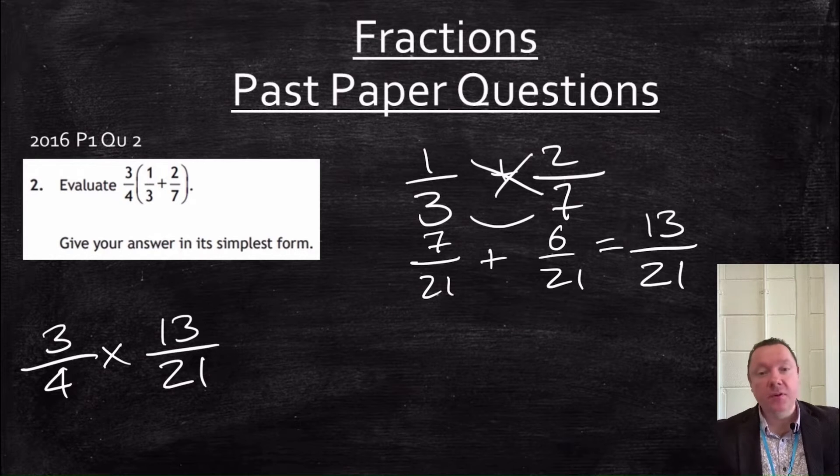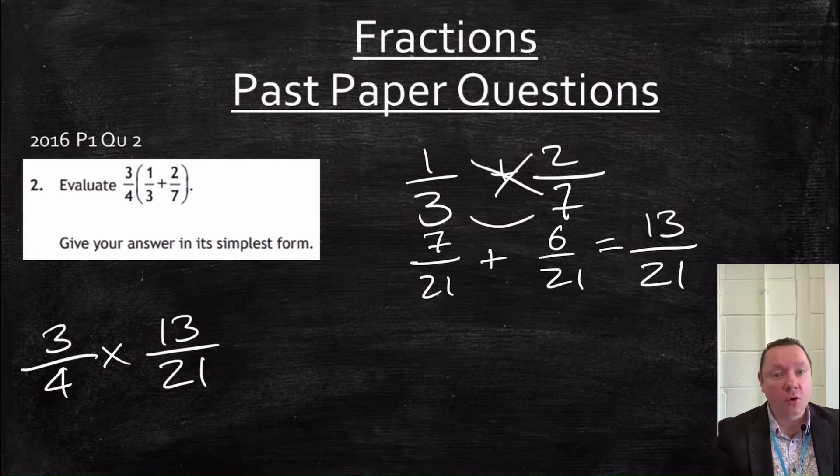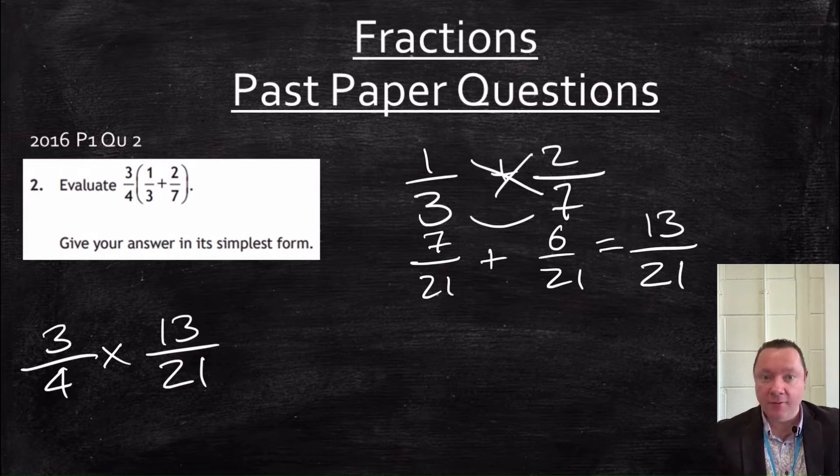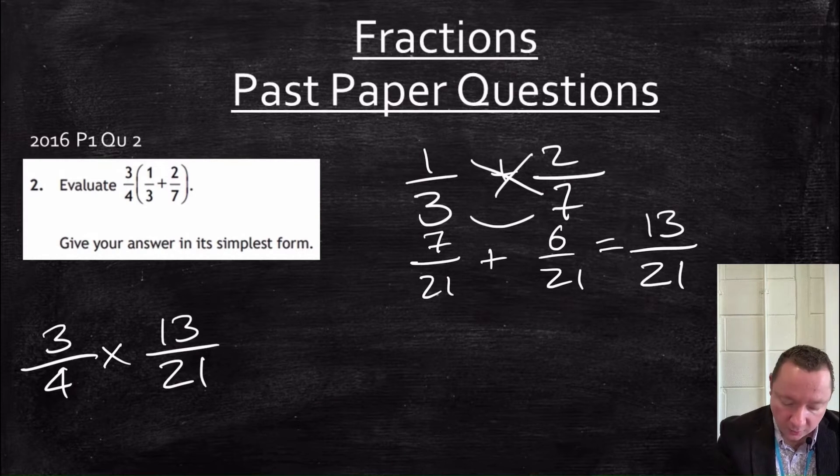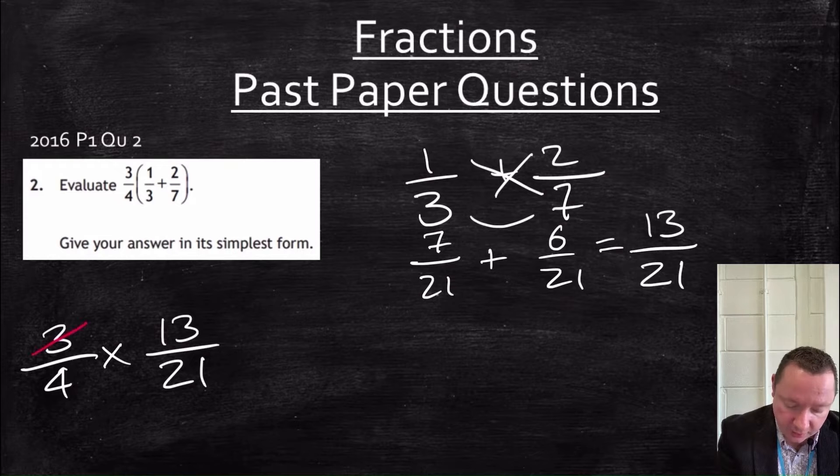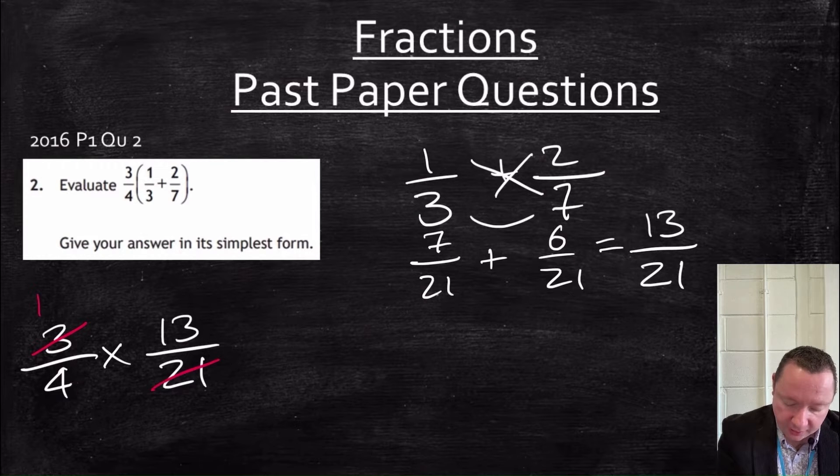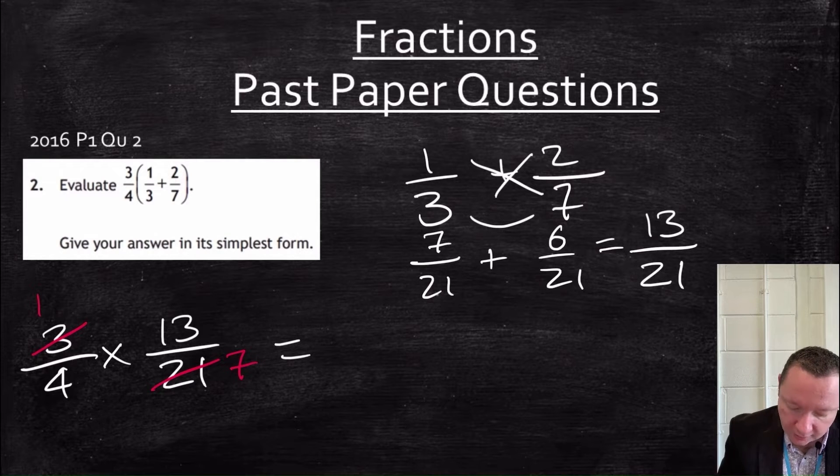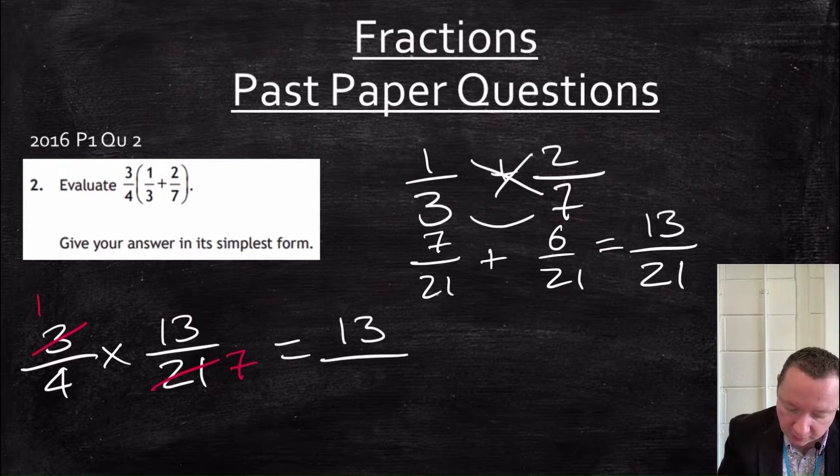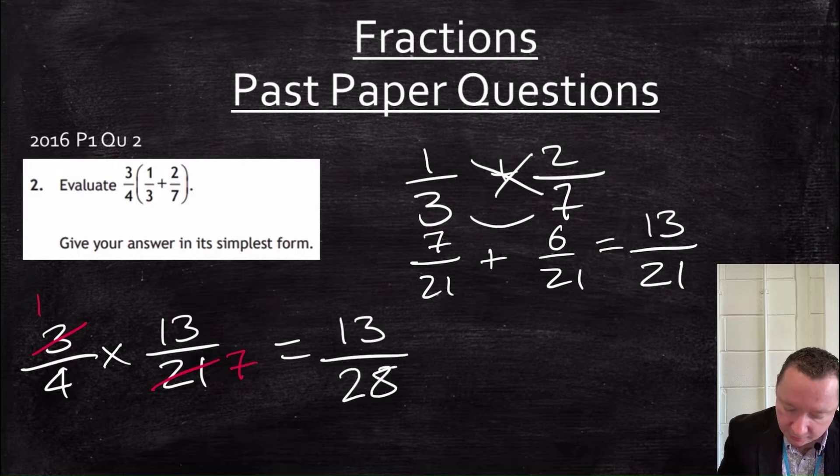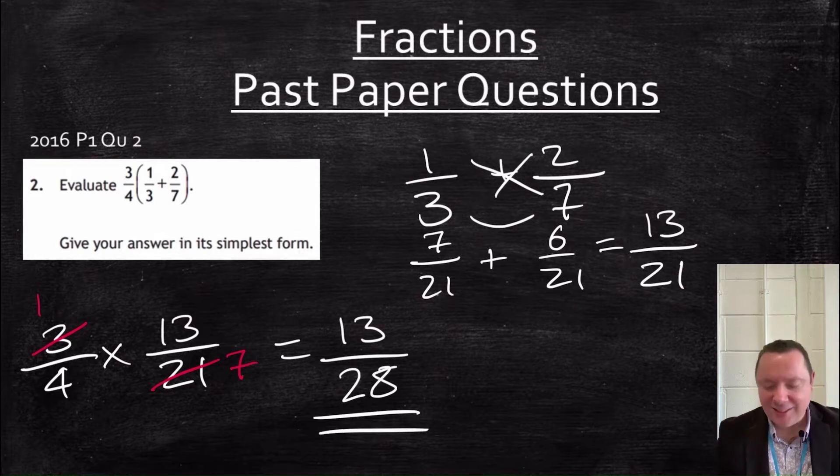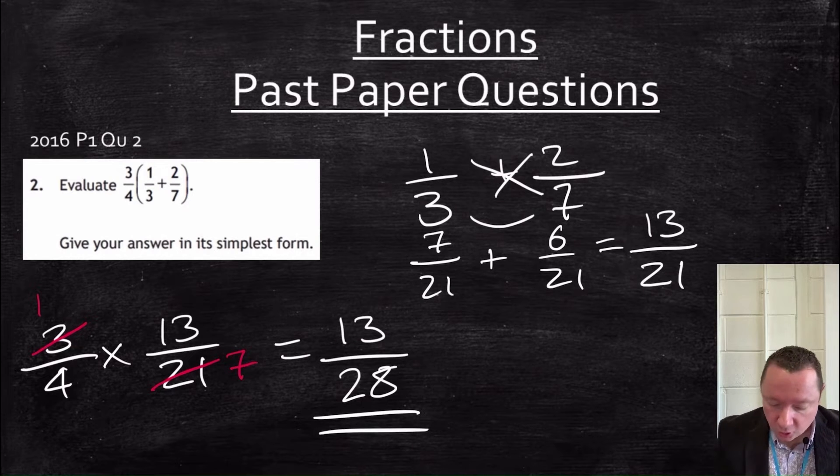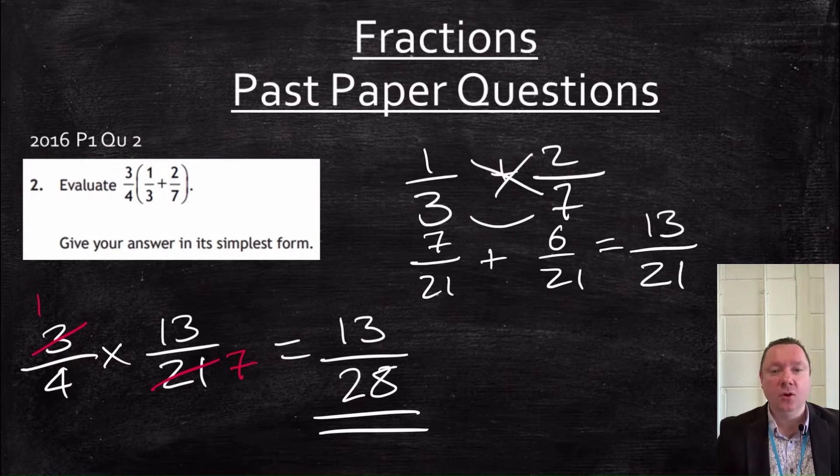Now, at this stage, you can simplify after you do the times or before. You can always simplify with a times, but you can't do it with an add for fractions. So here we go. We can simplify by dividing by 3 to get 1, divide by 3 to get 7. But now the sum becomes a lot easier. So that means we've got 1 times 13, and we've got 4 times 7 is 28. 13 out of 28. Just double check if there's any more simplification I can do. I know there isn't, but there's no numbers that go into 13 and 28. So I'm done.